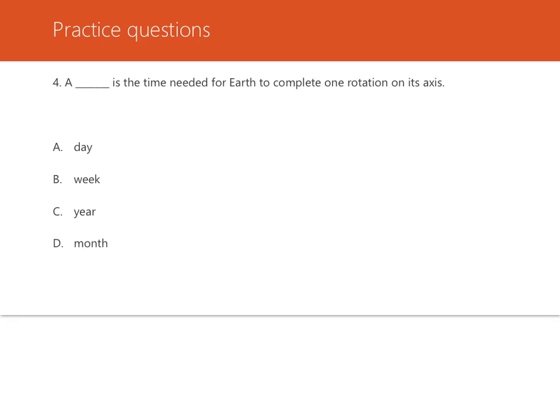Number four: a blank blank is the time needed for Earth to complete one rotation around its axis. We're talking about rotating around its axis. The Earth spins all the way around its axis once every day, or 24 hours — remember, that deals with daytime and nighttime. So we're going to go with A: a day is the time needed for Earth to complete one rotation on its axis.